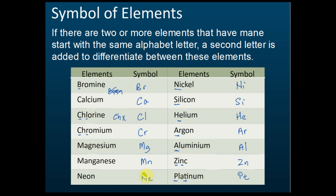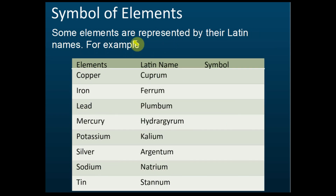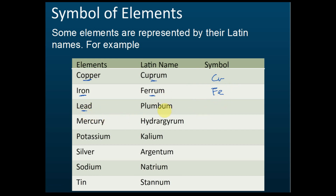For some elements, they are not represented by the first or second letter of their English name, but by their Latin name. For example, copper — the Latin name is cuprum — so the symbol is Cu. Iron — the Latin name is ferrum — so the symbol is Fe. Lead — the Latin name is plumbum — so the symbol is Pb. Mercury — the Latin name is hydrargyrum — so the symbol is Hg.